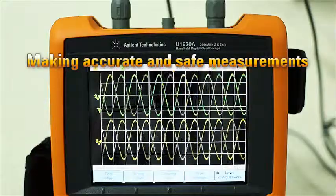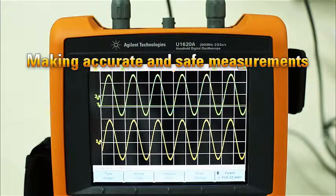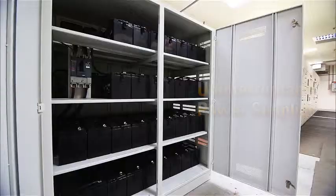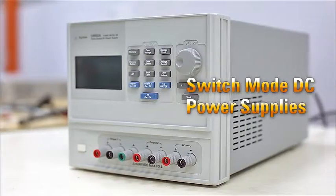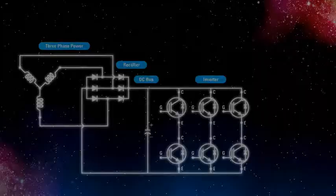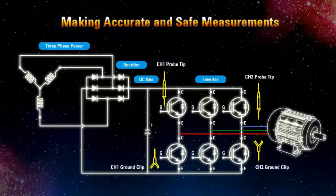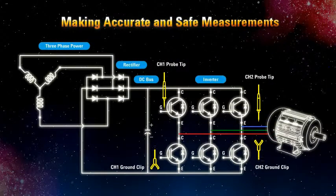Making accurate and safe measurements in power control circuits such as motor controllers, uninterruptible power supplies, and switching DC power supplies can be challenging when the signal reference is floating rather than referenced to earth-ground potential.